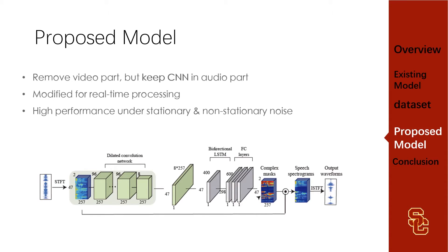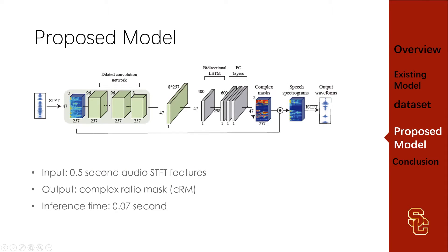First, we removed all video-related parts, but kept the convolutional layer in the audio part. Second, hyperparameters were adjusted to achieve real-time processing. The input is now 500ms short-time Fourier transform features — the 500ms window is the key point to real-time processing, which I will discuss in detail later. After many attempts, the new model now has 7ms inference time and a model size of only about 2MB, which is small enough for real-time processing.